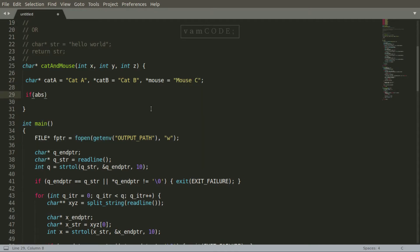Next, I'm going to write an if statement, which will check if the cats are at an equal distance from the mouse. So if z minus x is equal to z minus y, then we return mouse C as the output. And remember, we need to use the absolute value. So we pass the expressions z minus x and z minus y to the abs function.